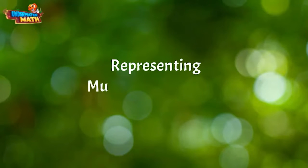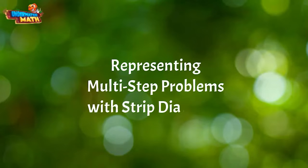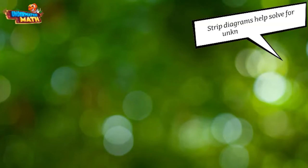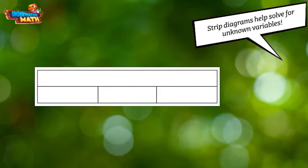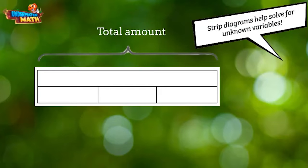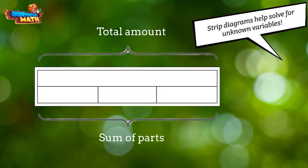Hello mathematicians, welcome back to Underwater Math. Today we are learning all about how to represent multi-step problems using strip diagrams. Strip diagrams are rectangular models that help us visualize the problem so we can solve for the unknown variable. One half of the diagram represents the total amount of something and the other half is broken up into a sum of parts. The number of parts varies with each problem.